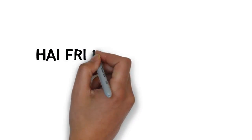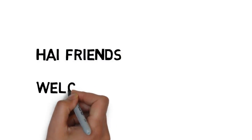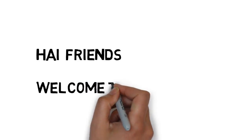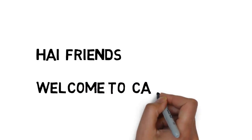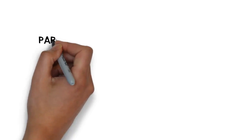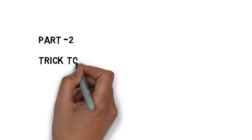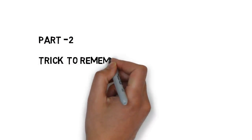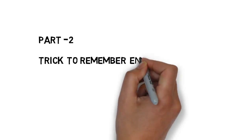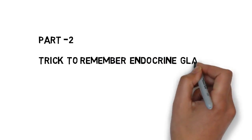Hi friends, welcome to Call for Trick. I hope you watched all my previous videos. If you don't, please go and watch — they are useful for many government exams. Today we are going to see Part 2. This is a trick to remember endocrine glands. See friends, there are total 9 endocrine glands.